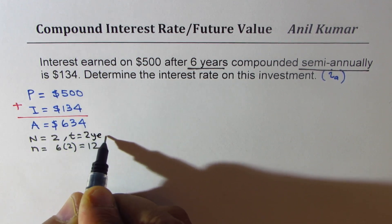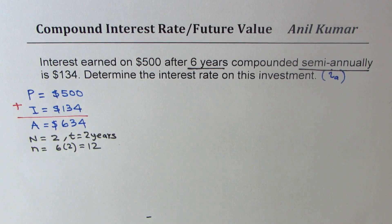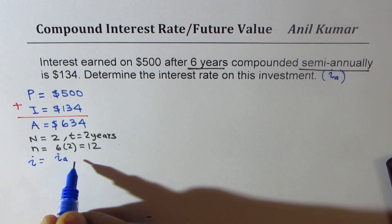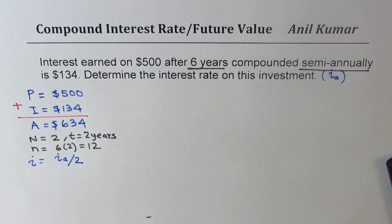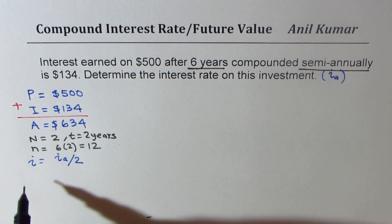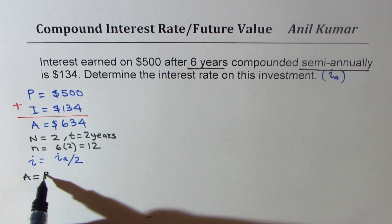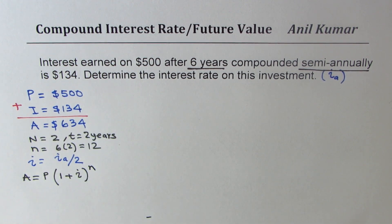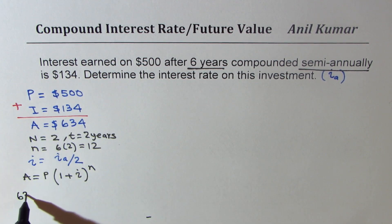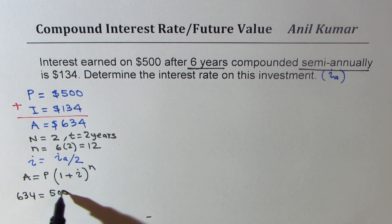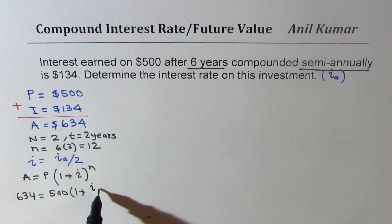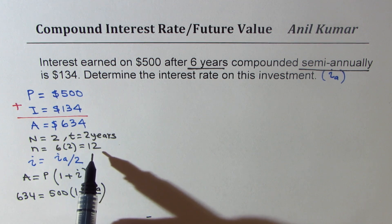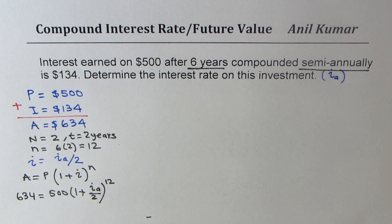So now we have the formula: A equals P times (1 plus i) to the power of n. Substituting these values: 634 equals 500 times (1 plus interest per annum divided by 2) to the power of 12. The first step is to divide 634 by 500, which gives us: 1.268 equals (1 plus interest per annum divided by 2) to the power of 12. Does that make sense?